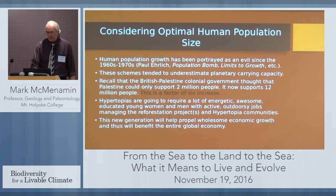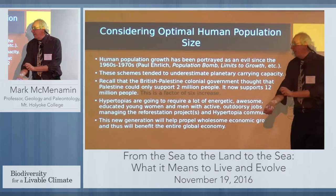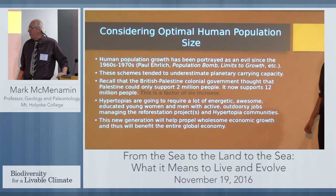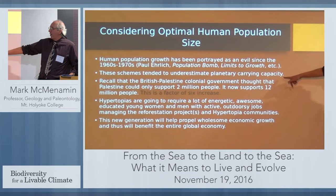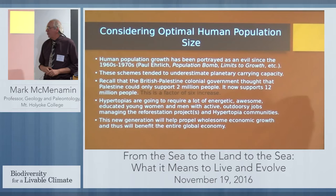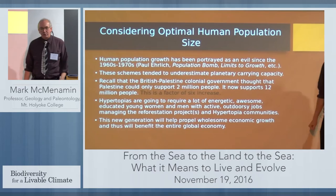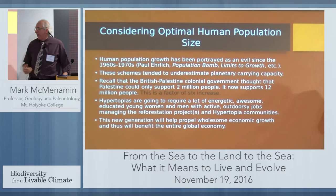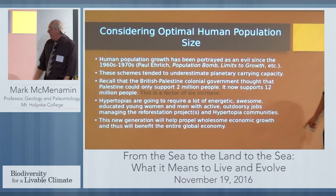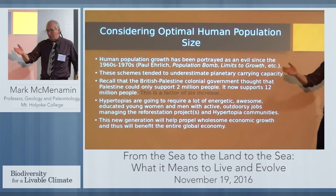We also have to think about optimal human population size. Human population growth has been portrayed as an evil since the 60s and 70s with Paul Ehrlich and his Population Bomb, the Limits to Growth group, and so forth. These schemes tended to underestimate our planetary carrying capacity — if you recall, the British-Palestine colonial government thought Palestine could only support 2 million people, and it now supports 12 million. Hypertopias are going to require a lot of energetic, awesome, educated young women and men, with active outdoorsy jobs managing the reforestation projects and the hypertopia communities.